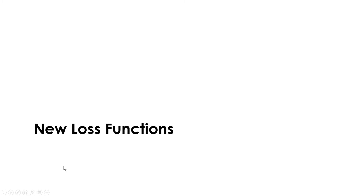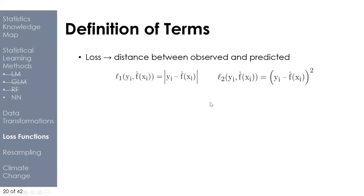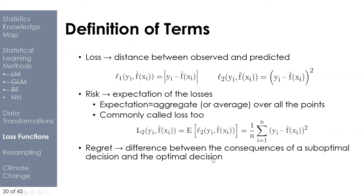Takeaways from this chapter: incremental basin modeling provides an easy way to include network information in statistical learning models, and the neural network can learn a lot from very few parameters. The next thing to decide for modeling is: what should be our loss function? Loss is the distance between observed and predicted values — defined as absolute error or squared error. Risk is the expectation or aggregation of loss over all points, such as mean squared error. Regret is the difference between consequences of a suboptimal decision and an optimal decision; since this model isn't being used for decisions and regret is hard to quantify, we'll use the risk minimization framework.